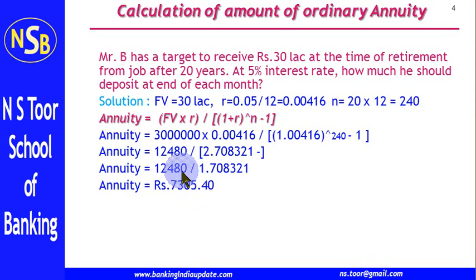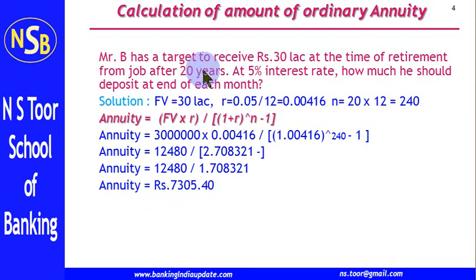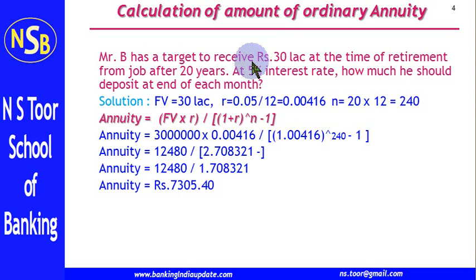Mr. B will deposit this amount every month at the end of each month, and after 20 years at 5% interest rate he will receive this much amount. That is how, based on the future value, we can calculate the amount of annuity — the amount of cash flow.